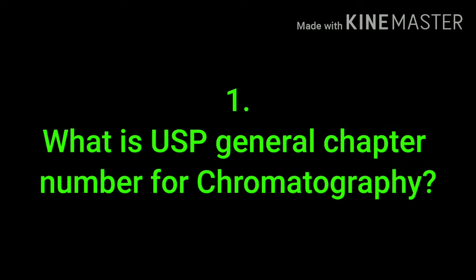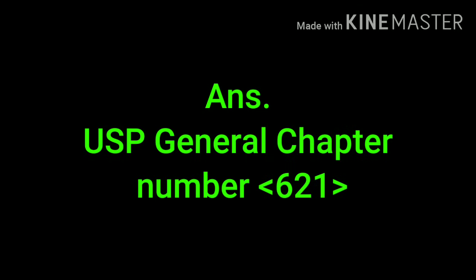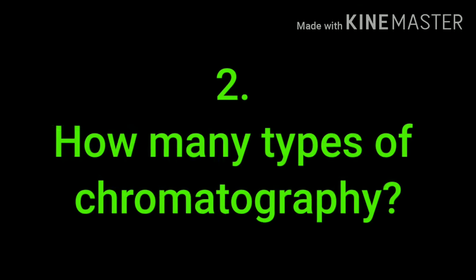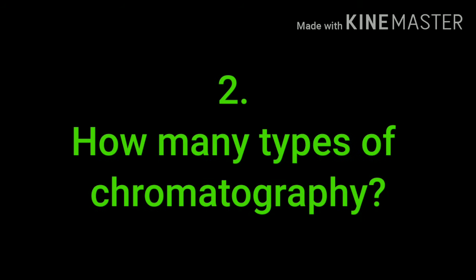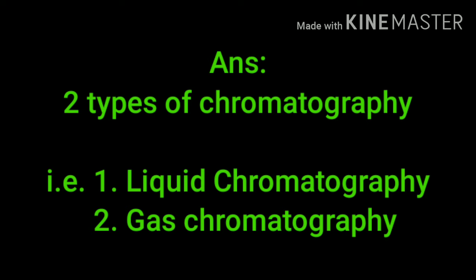First question is: what is the USP general chapter number for chromatography? USP general chapter number 621. How many types of chromatography? There are two types of chromatography: one is liquid chromatography and another is gas chromatography.